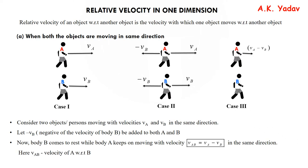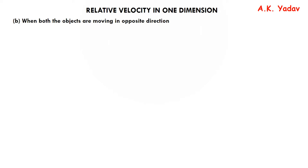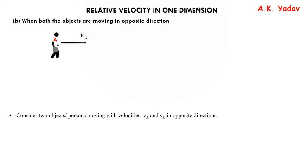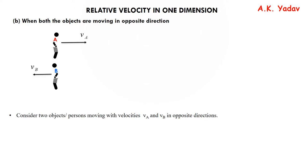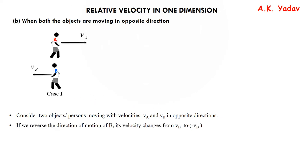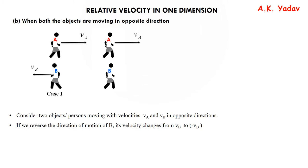Here, VAB is the velocity of A with respect to B. Now let us take the next scenario in which both objects are moving in opposite directions. We have object A moving with velocity VA and object B moving with velocity VB, but the direction of motion of B is opposite to that of A. We let A keep moving with velocity VA in the same direction but change only the direction — not the magnitude — of B.